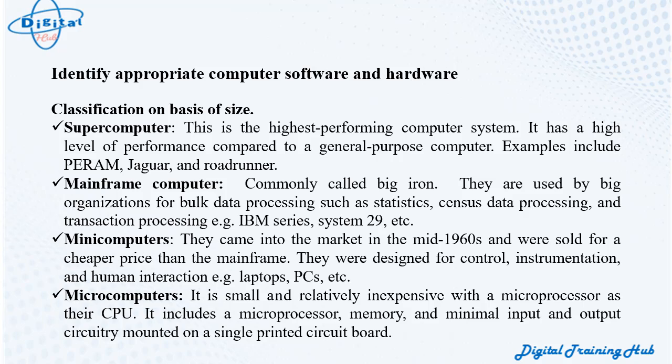Classification on basis of size: Supercomputer — the highest performing computer system, with a high level of performance compared to a general-purpose computer. Examples include PARAM, Jaguar, and Roadrunner. Mainframe computer — commonly called Big Iron, used by large organizations for bulk data processing such as statistics, census data processing, and transaction processing, e.g., IBM series System 29.